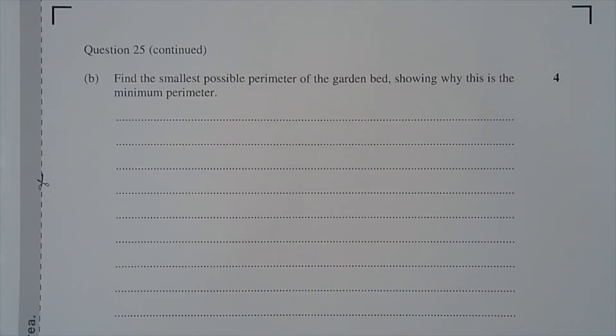Part B: Find the smallest possible perimeter of the garden bed showing why this is the minimum perimeter.